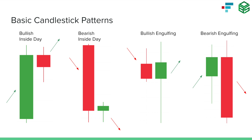The next pattern is the opposite — a bearish inside day — signified by a substantial price decrease on day one, followed by a day inside the range of that first day. This means the same thing as the bullish inside day in that we're seeing consolidation before continuation, except now instead of prices likely increasing, it's most likely that sellers will regain control and prices will continue to fall. The engulfing bar is the opposite of an inside day — the range of day two is outside that of day one, with day two's high higher than day one's high and day two's low lower than day one's low.